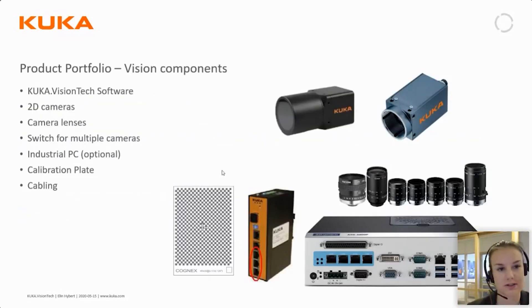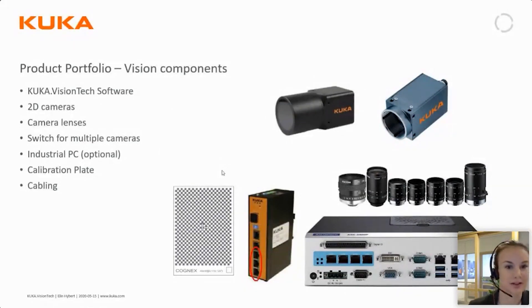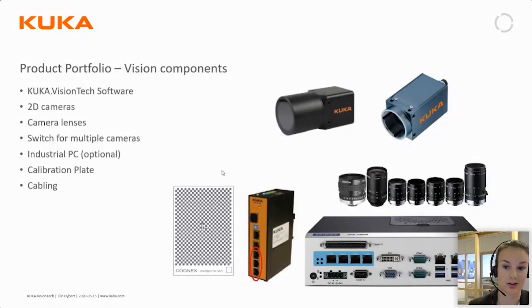Here on the screen you can see the product portfolio with the vision components included in this software package. First of all it's the VisionTech software, and there are also a selection of 2D cameras with camera lenses. To use several cameras on the network with a power over ethernet interface, there is a KUKA Switch available and also an option of a KUKA Industrial PC if you need higher image calculation. It also comes with a calibration plate and cabling for the cameras and switch.